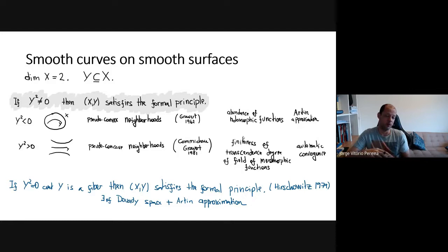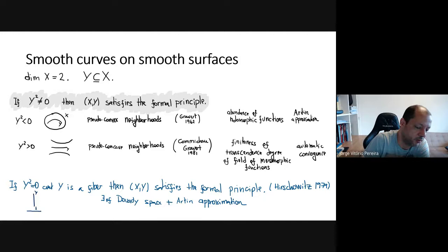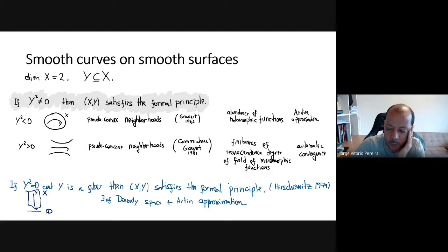When the self-intersection is zero, the situation is much more complicated. There is one case where things are still quite simple: when the curve Y is a fiber of a fibration. In this case, the pair still satisfies the formal principle, and this is again an application of Artin approximation. Artin approximation can always be applied when we are able to localize the problem, and here the localization is by identifying X with a germ of a curve in the dual space that parametrizes the variety.